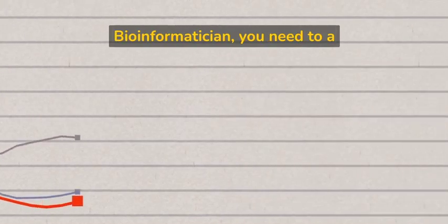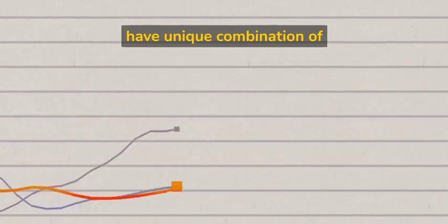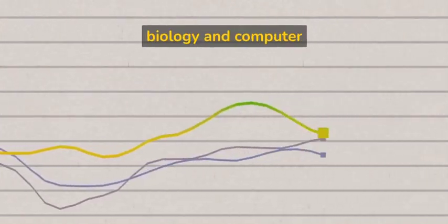To be a successful bioinformatician, you need to have a unique combination of skills that encompasses both biology and computer science.